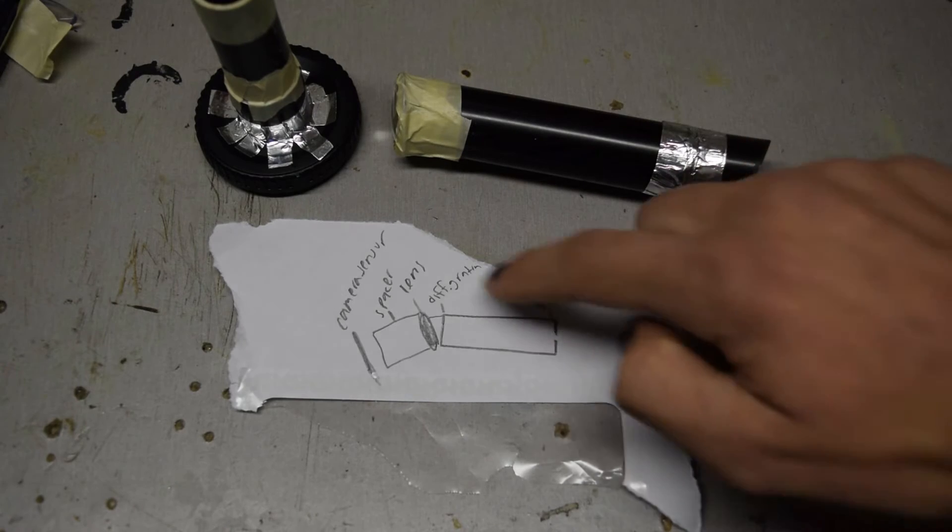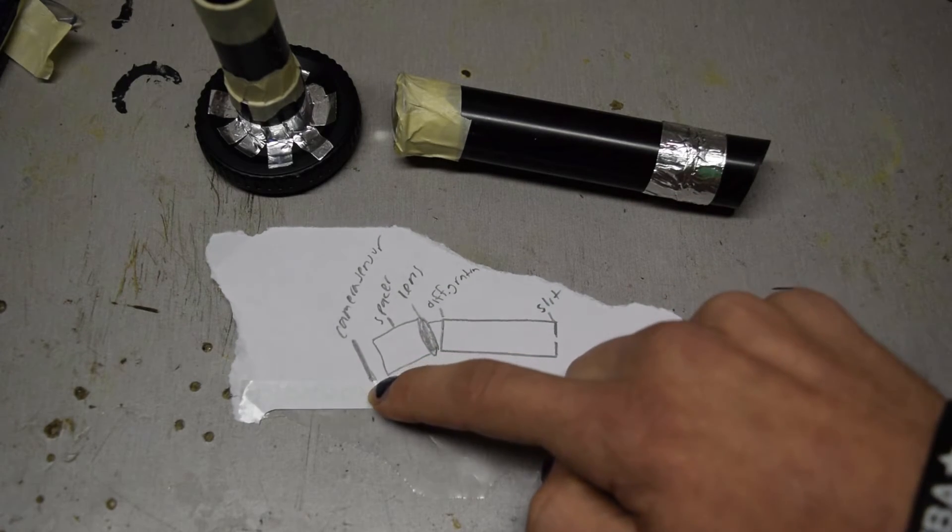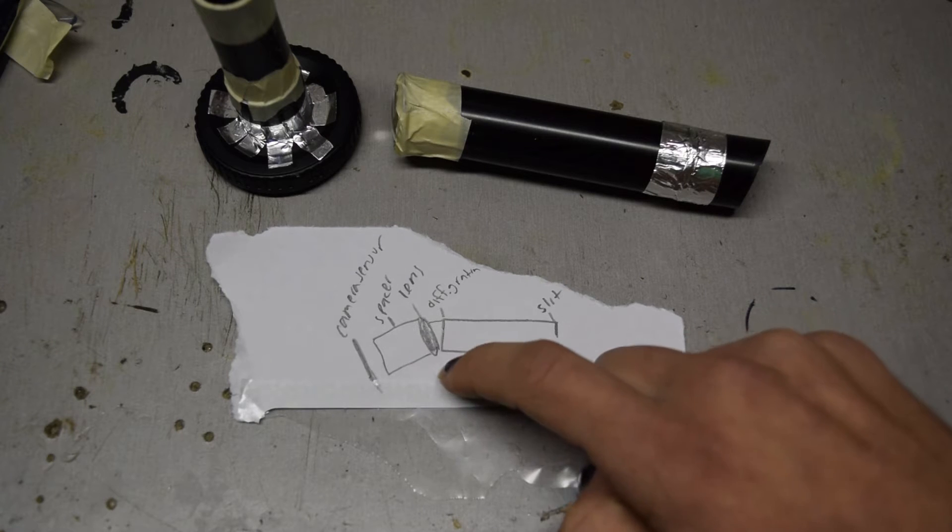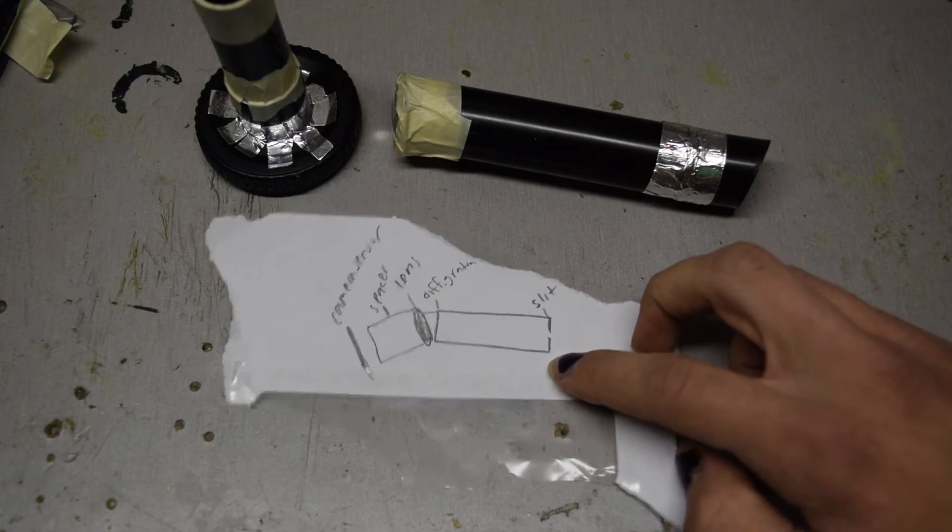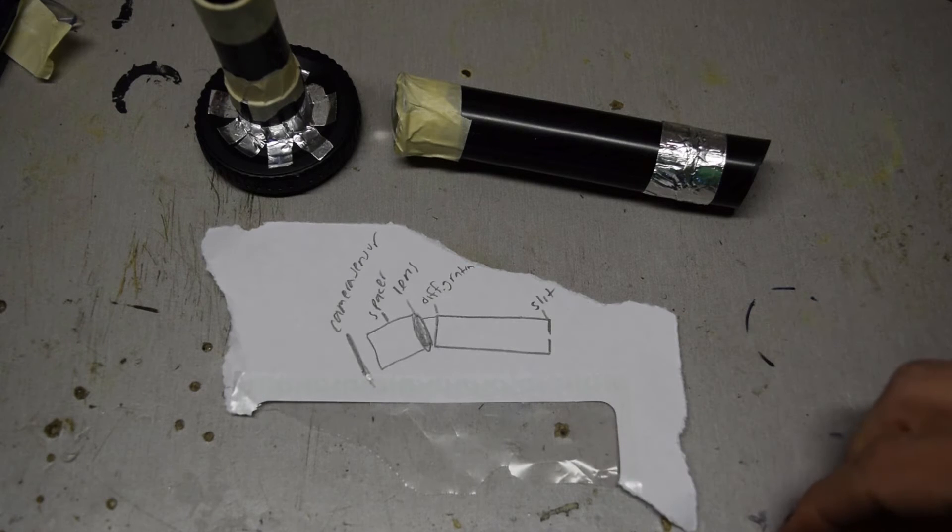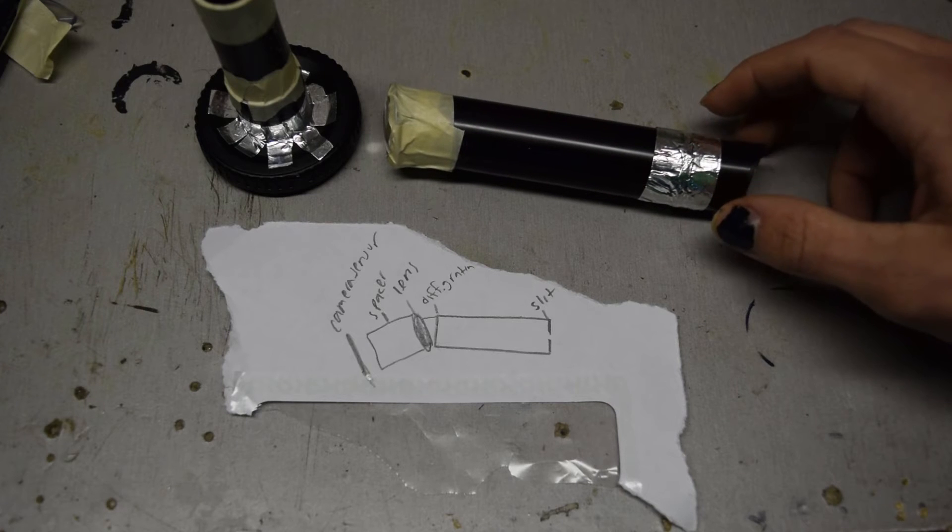But here's an actual diagram of the thing. Camera sensor right here, spacer, lens, diffraction grating right there, and then the slit right there. I'm not providing any actual measurements or numbers here because this entire thing is basically a hack.